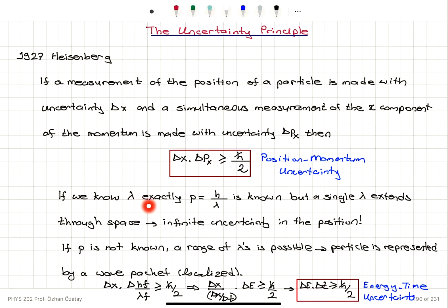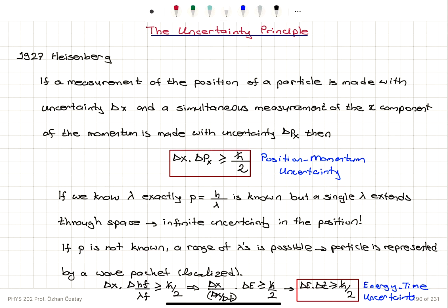If we know the wavelength exactly, p equals h over lambda is known, and that means we have a single wavelength that extends through space — infinite uncertainty in the position. So that means it's not localized anymore, it's delocalized. If the momentum is not known, a range of wavelengths is possible. A particle is represented by a wave packet, which is localized.